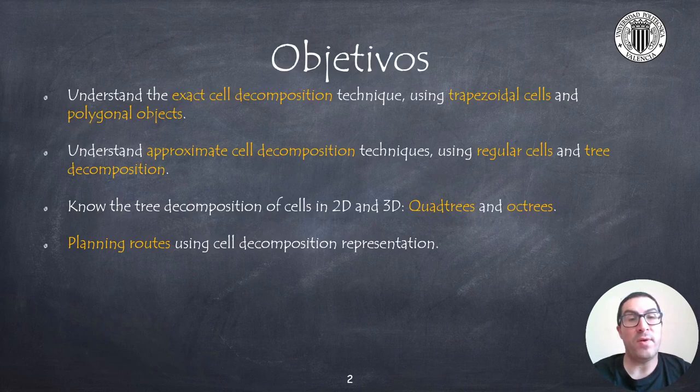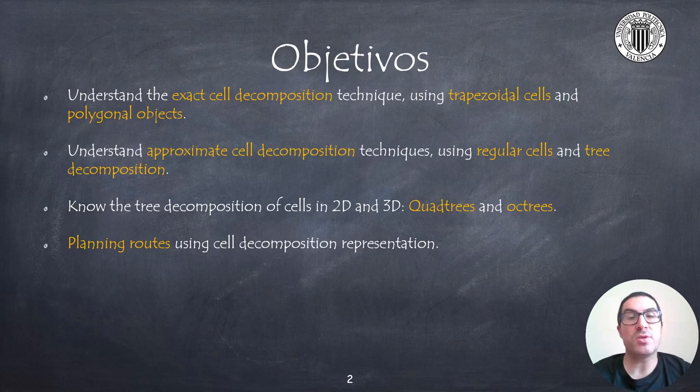I will first explain the technique for exact cell decomposition using trapezoidal cells with polygonal objects. Then I will explain an approximate cell decomposition with regular and irregular cells using a tree with application to two-dimensional and three-dimensional spaces known as quadtrees and octrees.